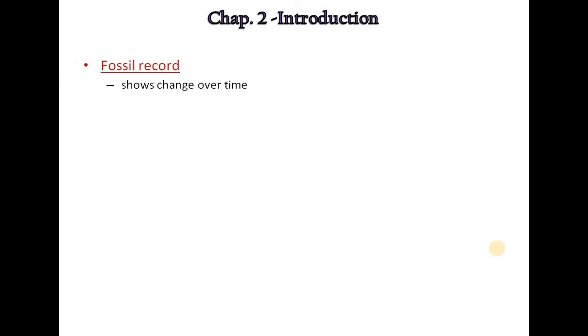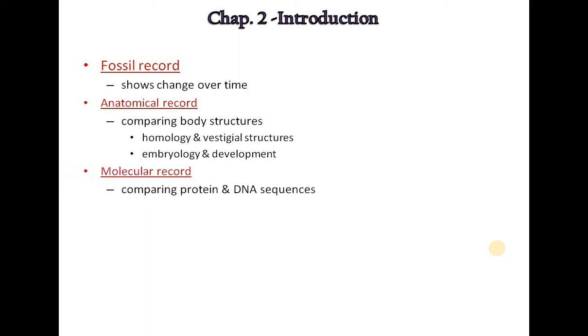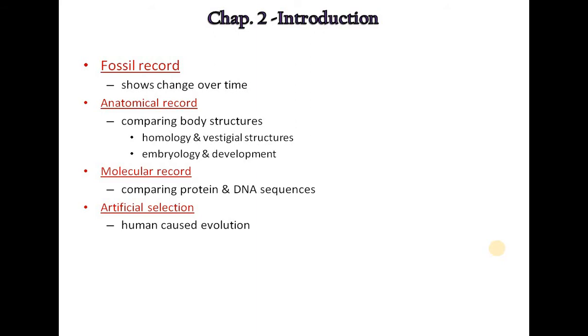Initially we will start with the introduction. What is important in organic evolution? Fossil record — fossil record shows changes over time. Anatomical record — these are helpful for comparing body structures, especially homology and vestigial structures, embryology and development. Molecular record — these are helpful for comparing protein and DNA sequences. And artificial selection, which is caused by human interference — artificial selection is human-caused evolution in the environment. All these factors are very important while studying organic evolution.